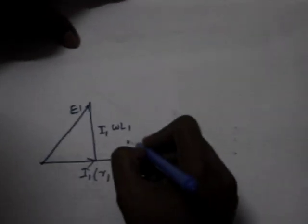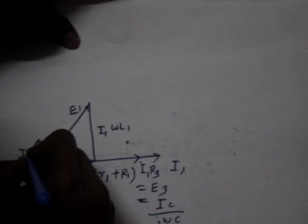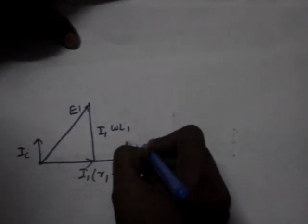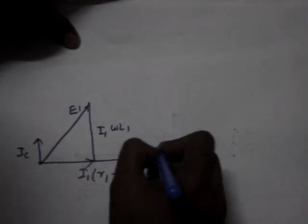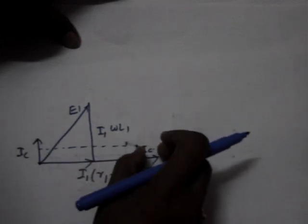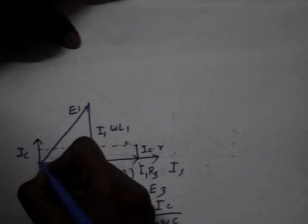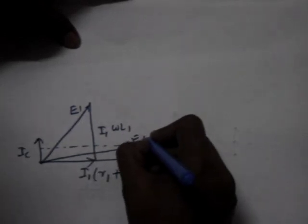Now we have this is Ic. This one is Ic into R, same phase with Ic drop. And we project it - Ic into R drop plus E3 is equal to E4.